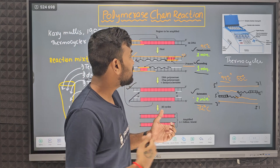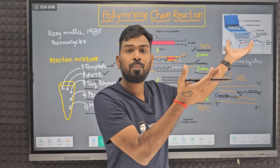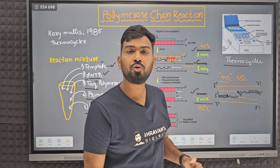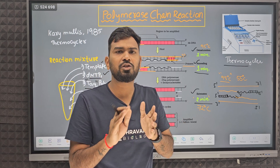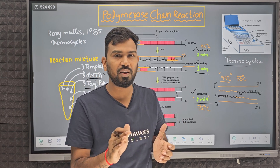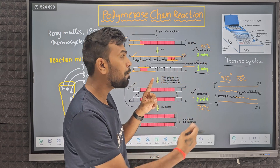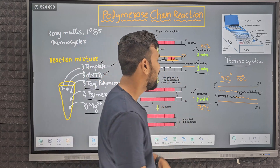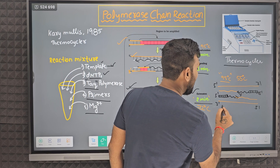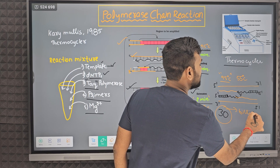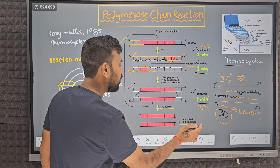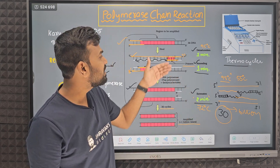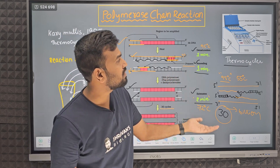Immediately the machine temperature again goes to 95°C, then 55°C, then 72°C — so each cycle takes approximately 3 to 5 minutes. As the number of cycles keep running, multiple copies — millions, billions — of your desirable gene are produced. As the NCERT states: after 30 cycles, approximately 1 billion copies are obtained. After N number of cycles, you get 2 to the power N molecules.